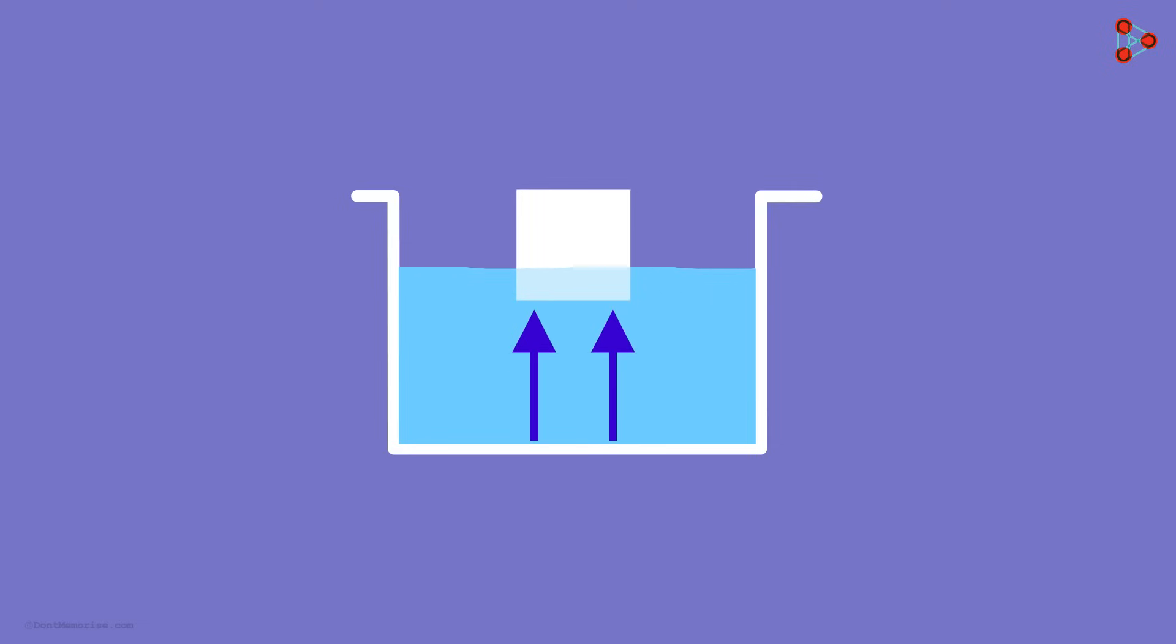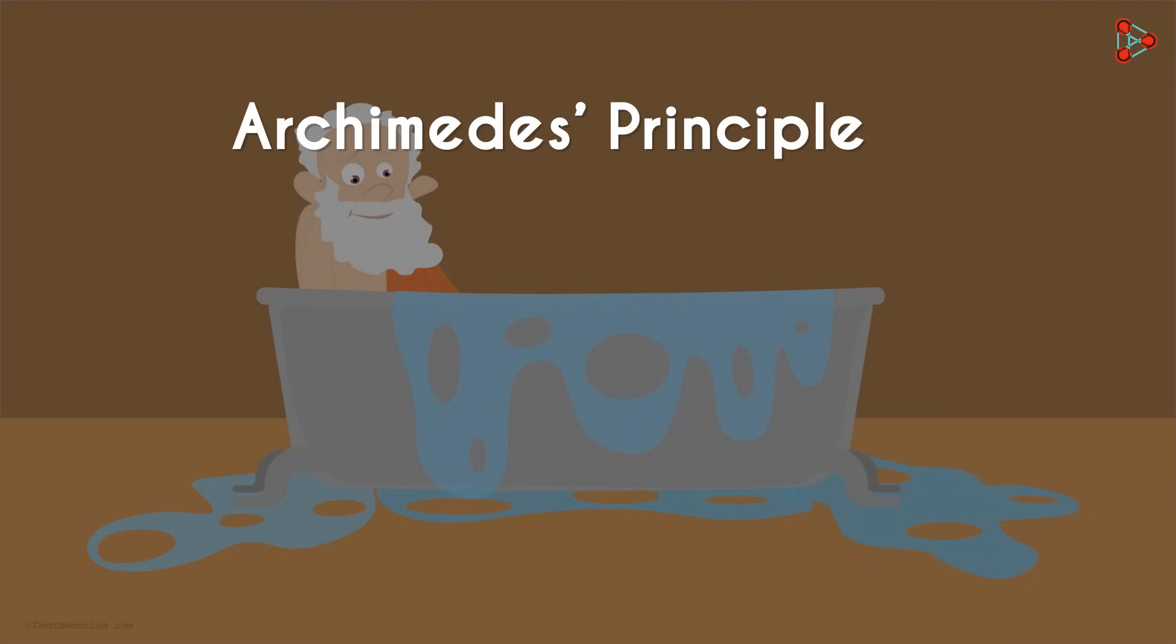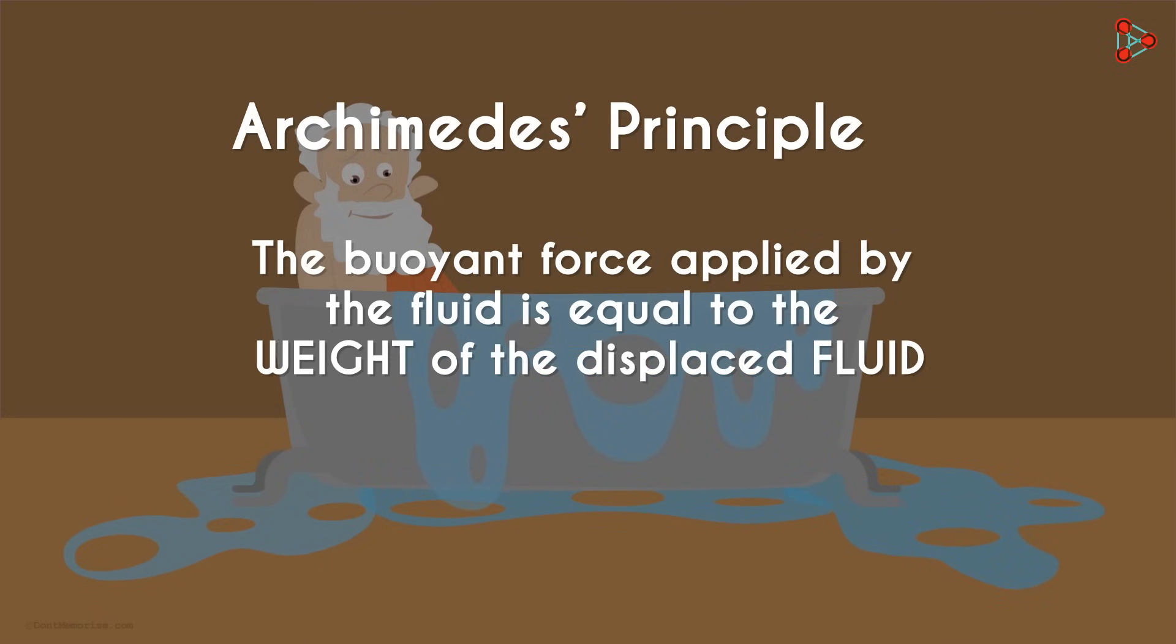In our previous videos, we have seen that when an object is placed in or on the fluid, the fluid exerts a buoyant force on it which acts upwards. The Archimedes principle goes just one step further in saying that the buoyant force applied by the fluid is equal to the weight of the displaced fluid.